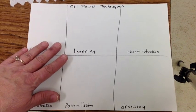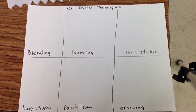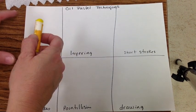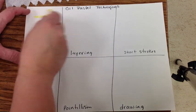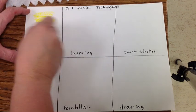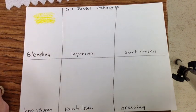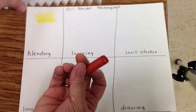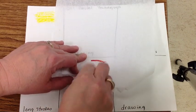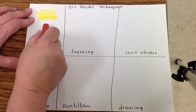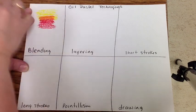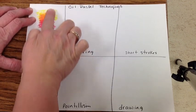First technique is blending. For blending, you're going to want to pick two colors. I've chosen yellow and red. You lightly color in, applying soft pressure, and then with the red, starting away from the yellow. If it's a little dirty, clean it off on a paper towel. Start away from the yellow and go into the yellow, and then you can use your finger to rub or blend.